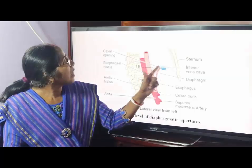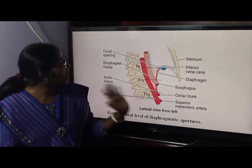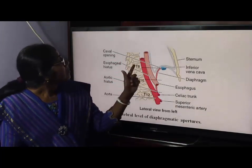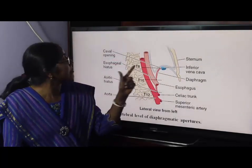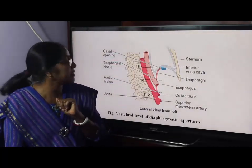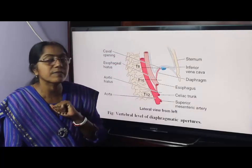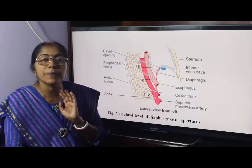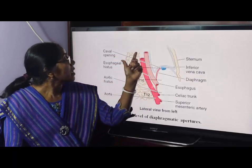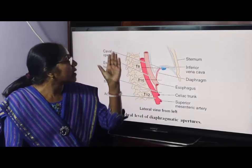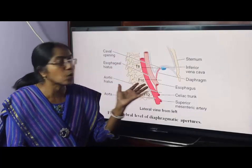These are the three major openings: the caval opening, the esophageal opening, and the aortic opening. The caval opening is situated at the intervertebral disc between the eighth and ninth thoracic vertebra. The esophageal opening is at the level of the tenth thoracic vertebra. The aortic opening is at the level of the twelfth thoracic vertebra.